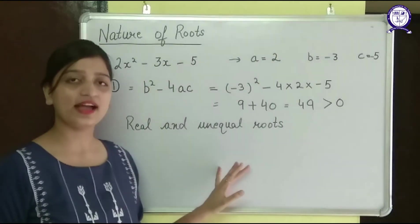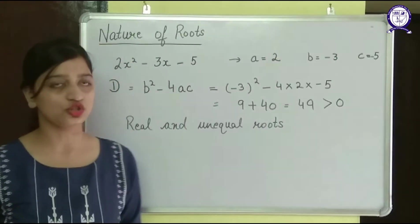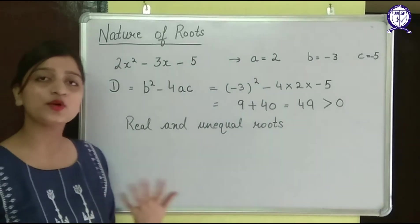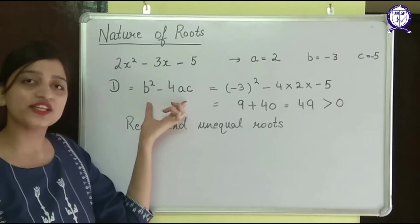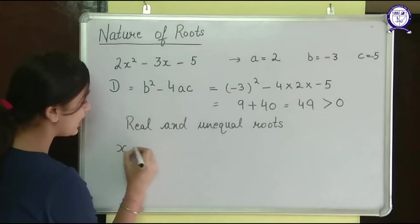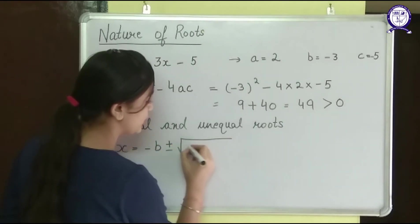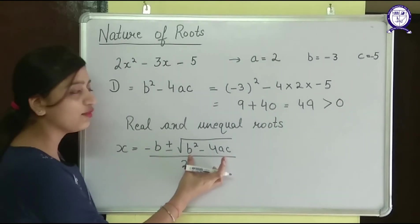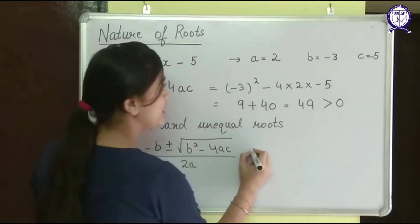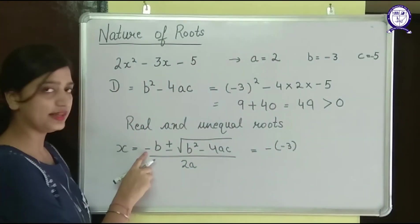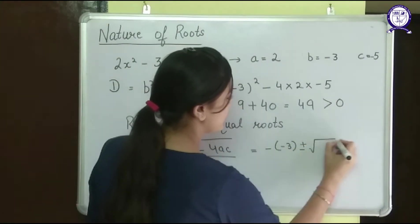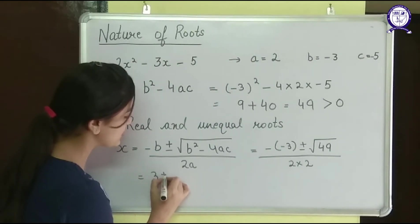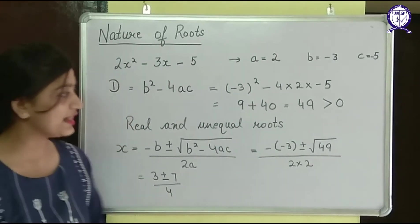Now, if the question says find the nature of roots and if the roots exist find them also, then we need to do the question further. We will apply the quadratic formula because I have already found the discriminant, so the question becomes quite easy. The formula is: x equals minus b plus or minus under root of b squared minus 4ac, upon 2a. This value I have already found, so I can directly put it here. My b is minus 3, so minus of minus 3 is plus 3, then plus or minus under root 49, upon 2 into 2.